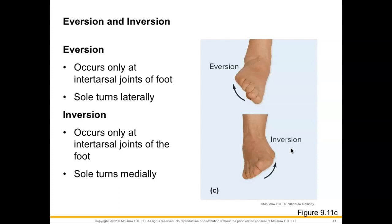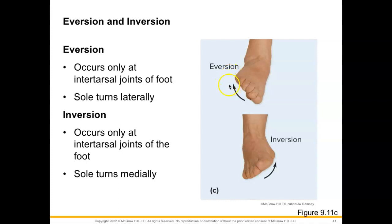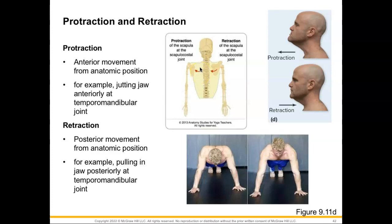Eversion and inversion take place at the intertarsal joints of the foot. Eversion is turning the lateral side of the foot upward, or rotating the sole of the foot laterally — like a skier or hockey player turning out the lateral sides of their feet to stop. Inversion is taking the sole of the foot and turning it medially, or lifting the medial side of the foot upward.